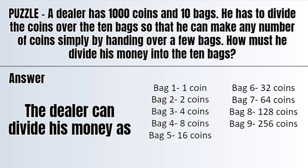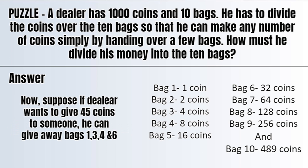Bag 4 gets 8 coins, bag 5 gets 16 coins, bag 6 gets 32 coins, bag 7 gets 64 coins, bag 8 gets 128 coins, bag 9 gets 256 coins, and bag 10 gets the remaining number of coins, which would be 489 coins.